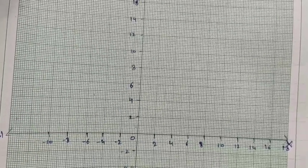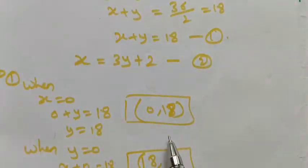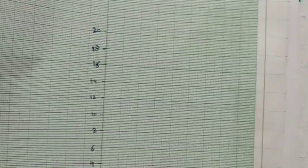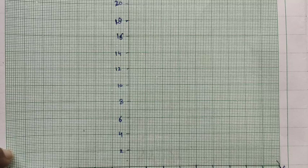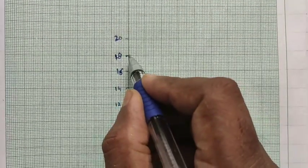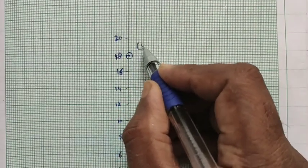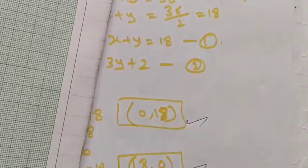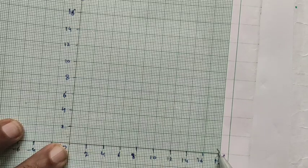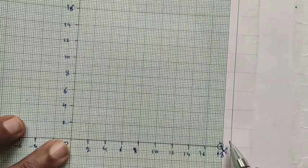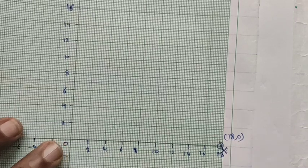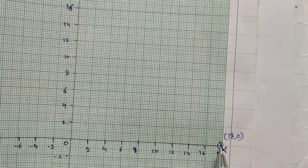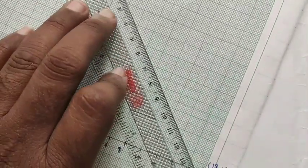We plot the points for the first equation: (0, 18) and (18, 0). The point (0, 18) — x-axis is 0, y-axis is 18, so it lies on the y-axis. The point (18, 0) — x-axis is 18, y-axis is 0, so it lies on the x-axis. Now we join these two points for the first equation.